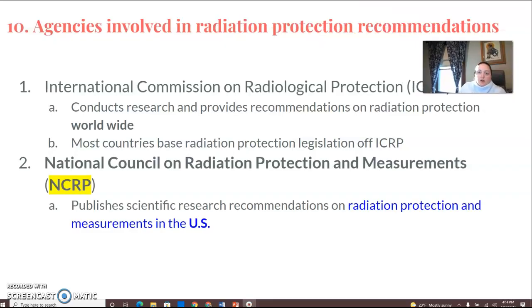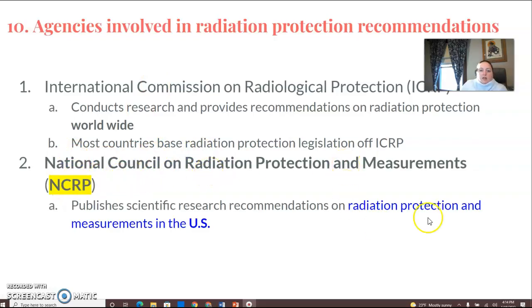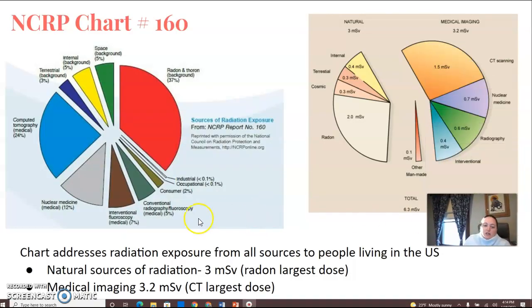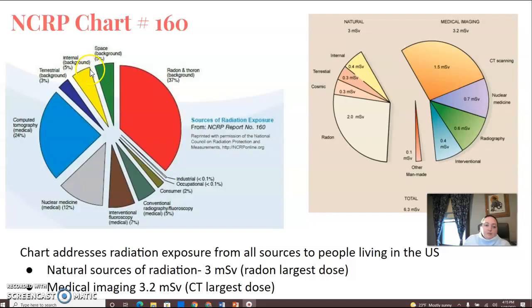Two agencies are involved in radiation protection recommendations: the ICRP — International Commission on Radiological Protection — which covers radiation protection worldwide, and the NCRP — National Council on Radiation Protection and Measurements — which covers radiation protection in the U.S. The NCRP Report 160 addresses radiation exposure from all sources to people living in the U.S., including background radiation, space radiation, CT at 24%, nuclear medicine at 12%, and interventional radiography.